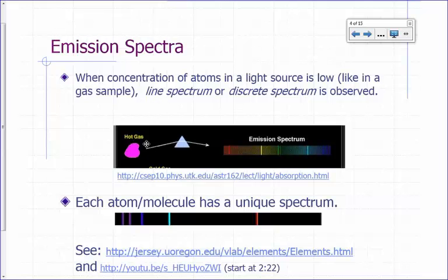The spectrum you get from a sample that has a low concentration of atoms will look something like this. You're not going to get a continuous band of colors. You're actually going to get mostly dark areas with very bright lines in between.